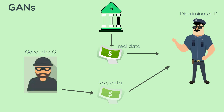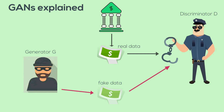Let's consider the example of a money counterfeiter to understand adversarial learning. The counterfeiter's goal is to fool the public and the police, while the police's goal is to find fake bills and arrest him. In doing so, the counterfeiter learns to make more realistic bills, and the police gets more accurate at detecting fake ones.